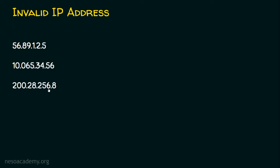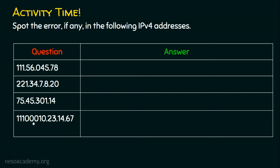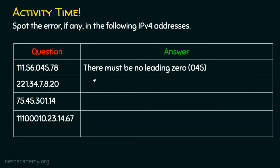Now there is an interesting activity for you. This activity will help us find out valid and invalid IP addresses, and more precisely find out the invalid IP addresses with a reason. The activity is: spot the error, if any, in the following IPv4 addresses. Pause this video for a while and think of the answer. In the first one, we can see there are only 4 octets, but there is a prefix 0. So the answer is: there must be no leading zeros — 045 is not permitted, simply 45 is accepted.